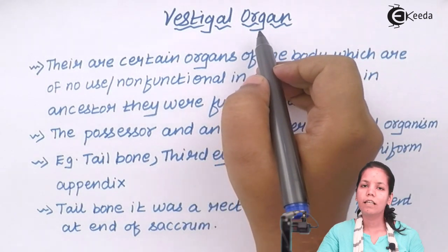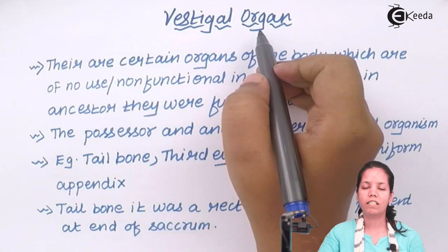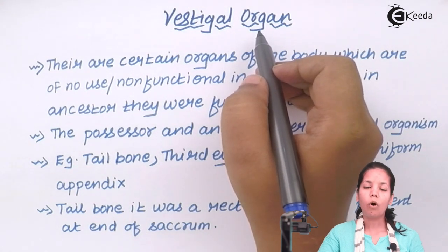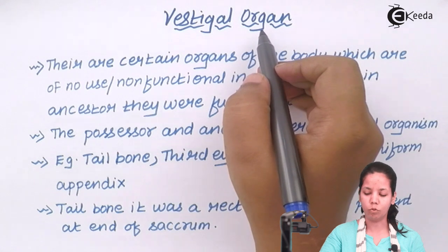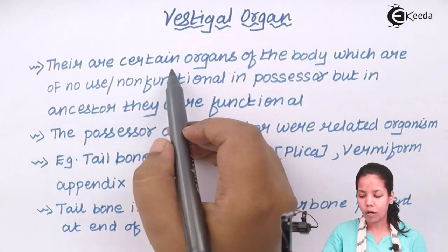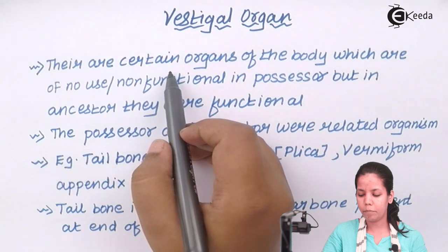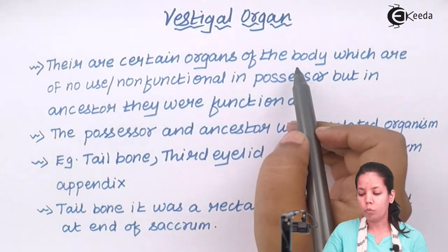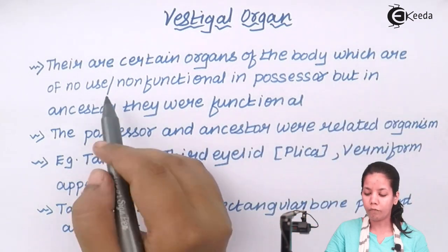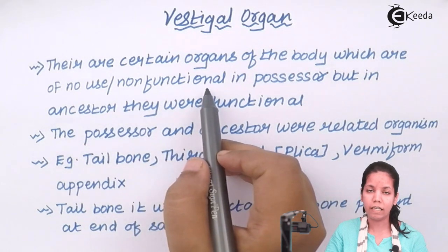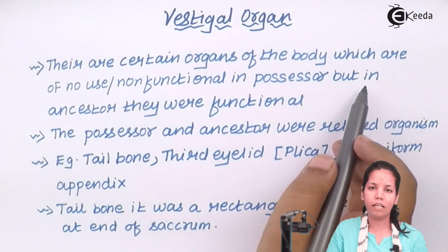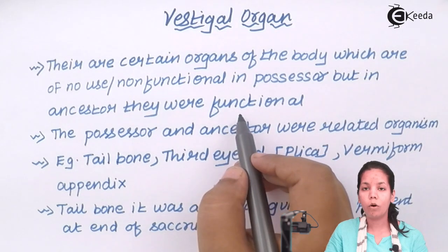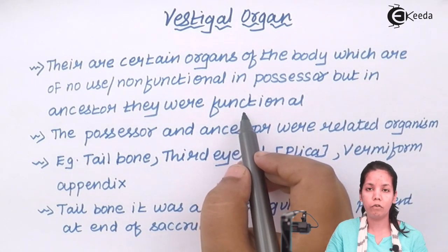Vestigial organs — the simple definition would be: organs which were present earlier but now have evolved or do not function anymore. In certain organisms there were organs present in the body which are of no use or non-functional in the current possessor, but in their ancestors, which were closely related to them, these organs were quite functional.